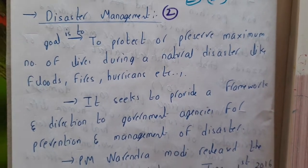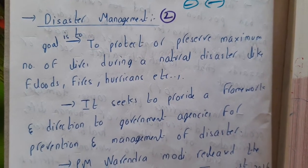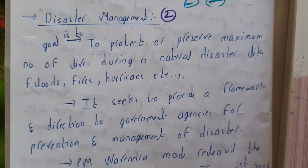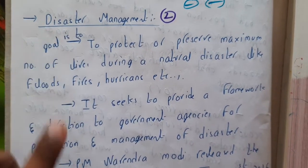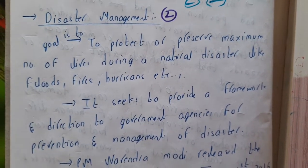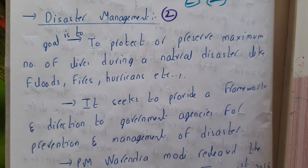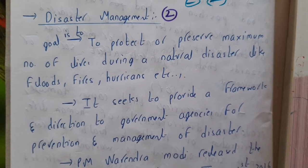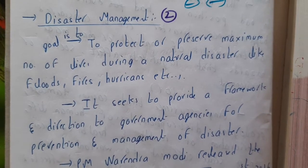Hello guys, we are back with our next lecture. In this lecture, let us go through disaster management. In the last lecture we discussed the word disaster — disaster is nothing but something bad is going to happen, in simple words, or which causes a huge loss for humans in terms of life, property, and all those things.